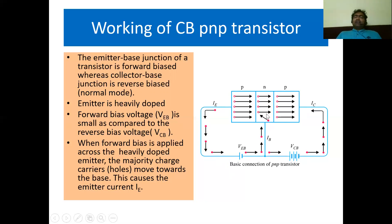When holes enter the base region, some may recombine with electrons, but the recombination percentage is less than 5% because the base is lightly doped and very thin. As holes recombine with electrons, fresh electrons in the N-region are supplied by the battery negative terminal — this constitutes the base current IB. The remaining 95% of holes are transferred to the collector, which is connected to the battery negative terminal, attracting the holes. As holes move in the collector region, they constitute the collector current IC. We can write: IE equals IB plus IC.